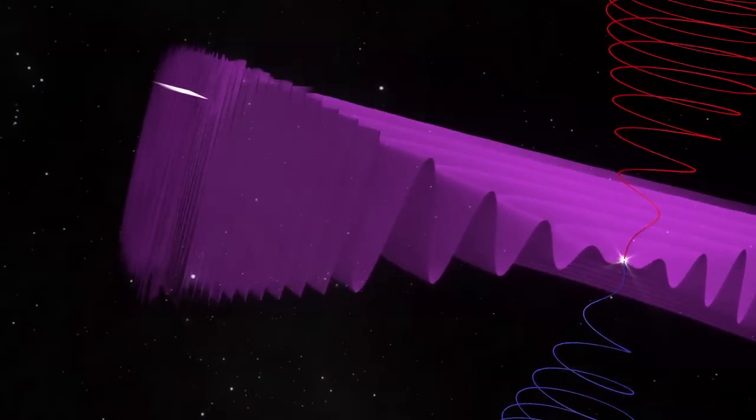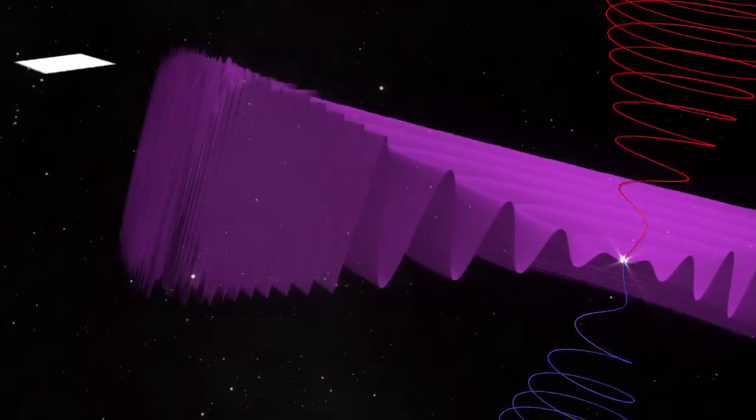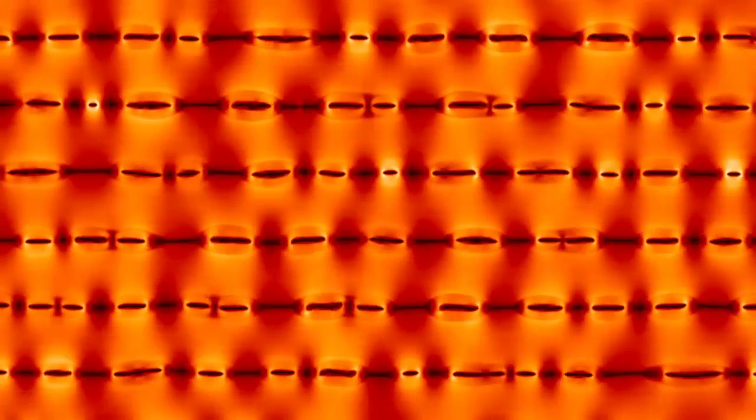The Voyager spacecraft have now found that after the termination shock, these stacked up ripples of magnetic field form bubbles, shown here as a computer simulation.